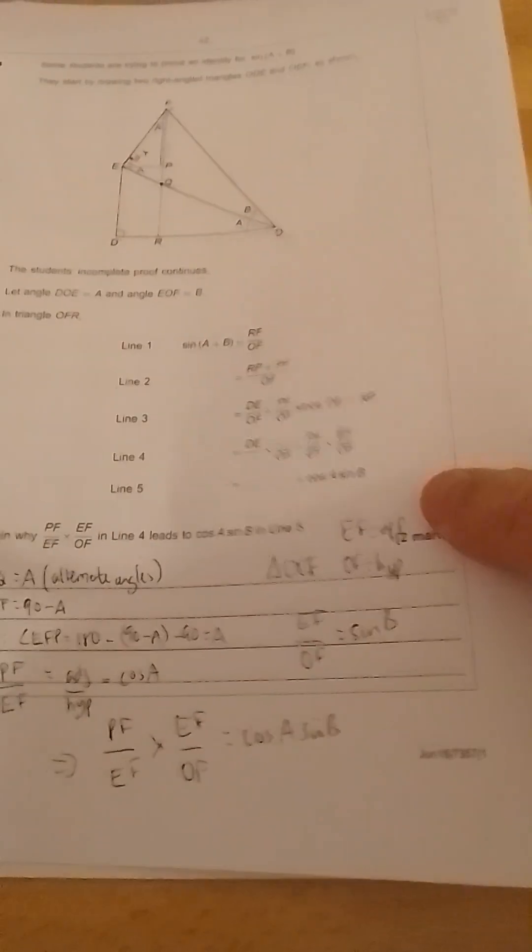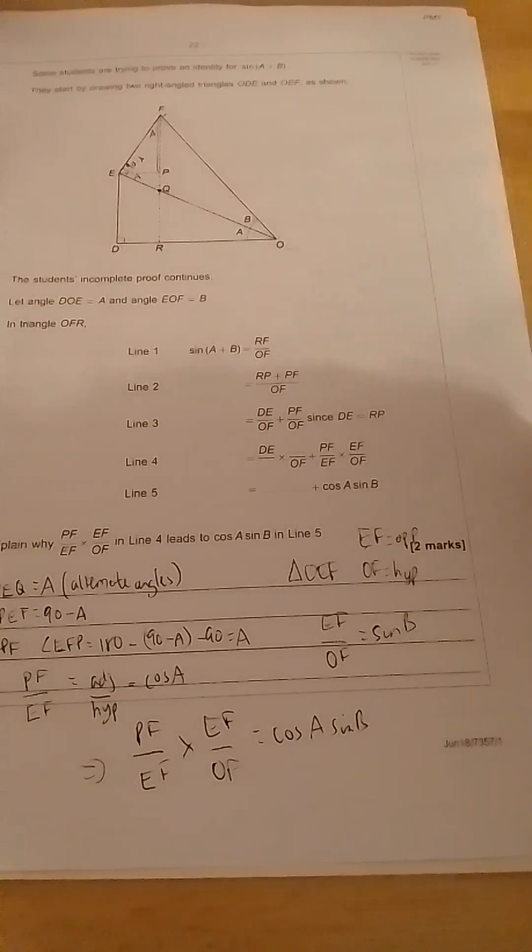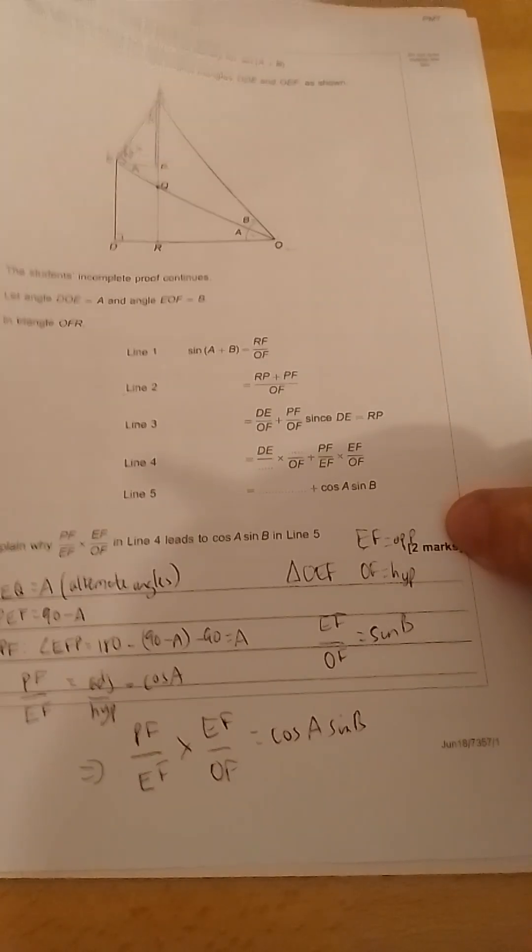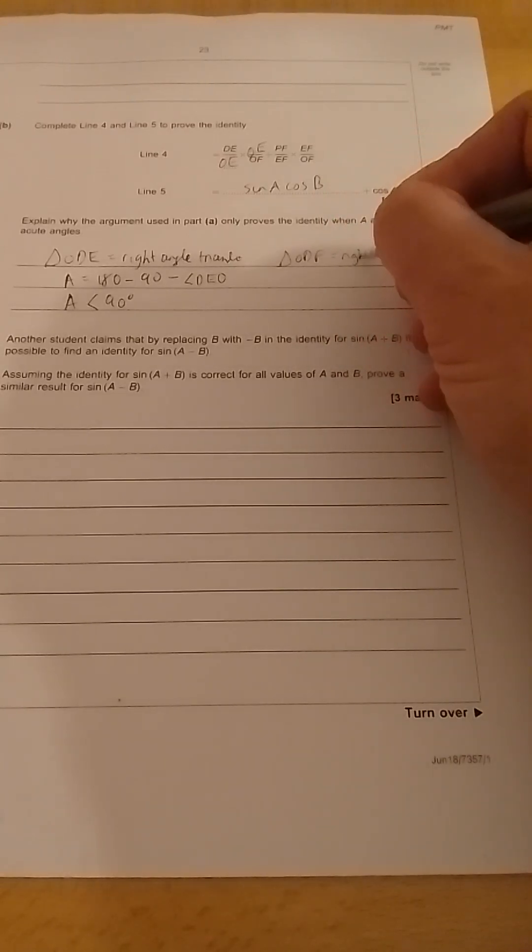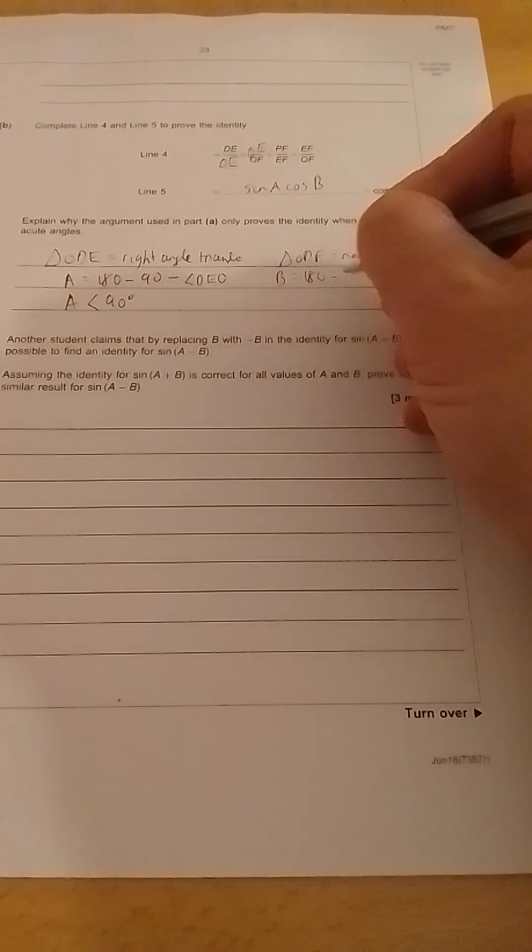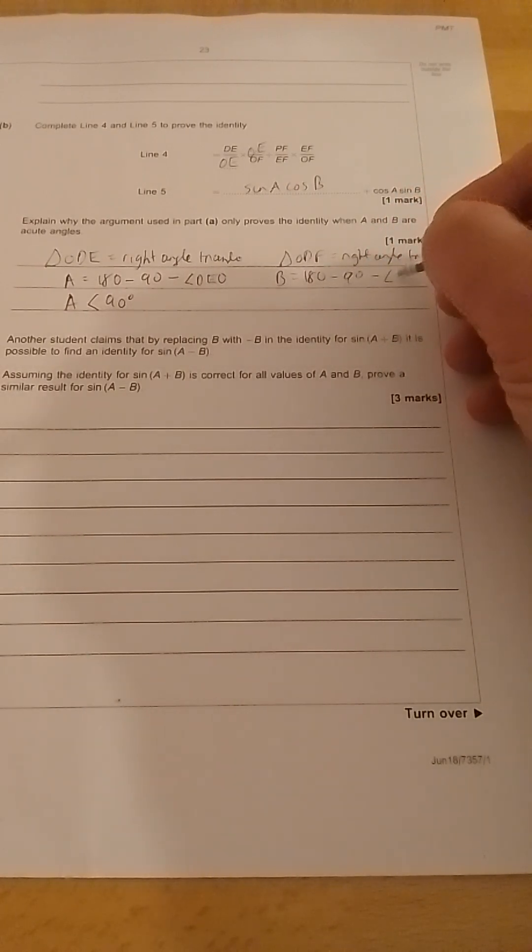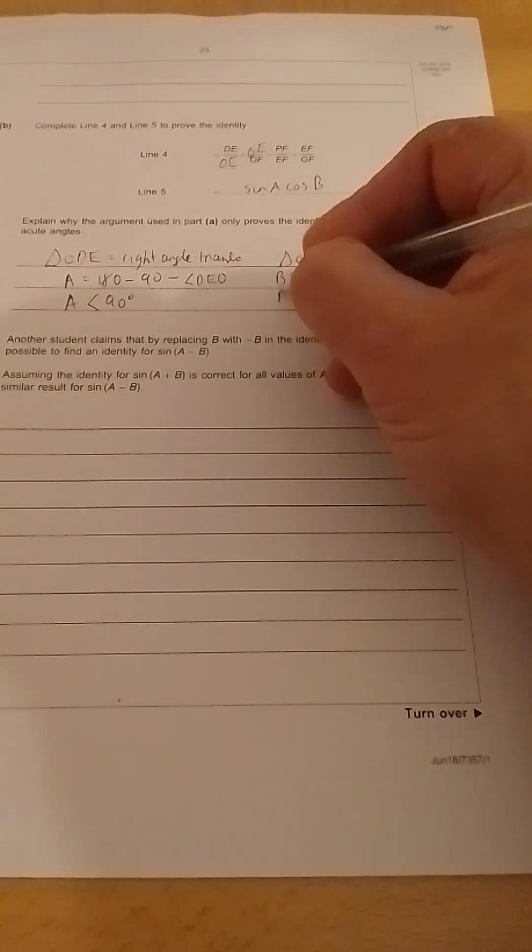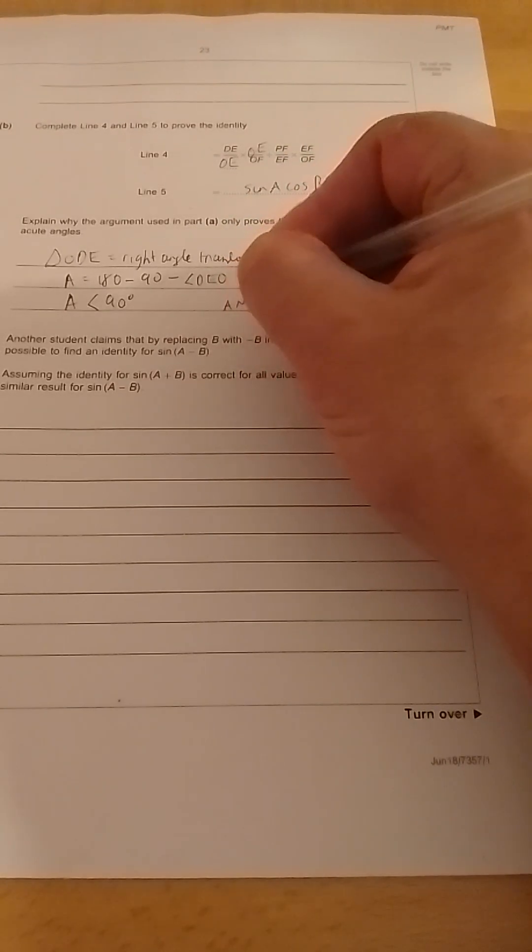Likewise, if we look at the diagram again for a moment, the top triangle is OEF, and we can see we have a right angle and another angle, which is EFO. So triangle OEF is a right angle, so B is equal to 180 minus 90 minus angle EFO. So B has to be less than 90 degrees.